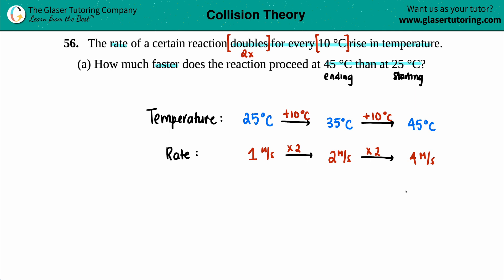And this is the ending information because we're ending now at 45 degrees and we're starting with 25. So how much faster does that reaction proceed? We started with a rate of one and we ended at a rate of four. Four divided by one is four. That means this reaction proceeded four times faster. How much faster does the reaction proceed at 45 than at 25? It goes four times faster, and that's it.